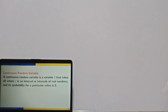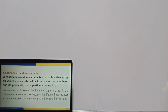In the case of a discrete random variable, the values taken by x are discrete, separate values. But for a continuous random variable, x takes continuous values in an interval, and the probability for any particular value of x is zero by definition. For example, if x denotes the lifetime of a person, it is a continuous random variable because lifetime happens over a continuous period of time.